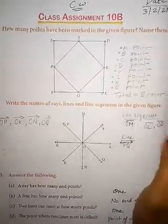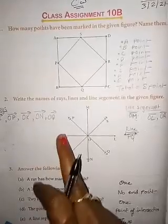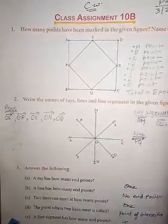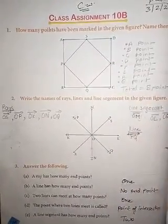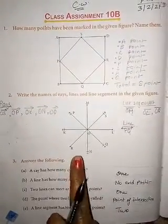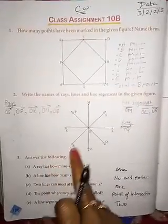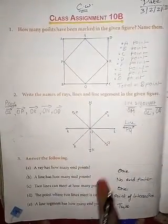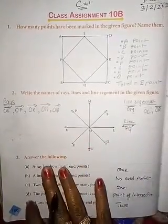Now question number 2: write the name of rays, lines, and line segments in the given figure. Children, see this figure carefully. Find out all the lines. This figure shows intersecting lines.